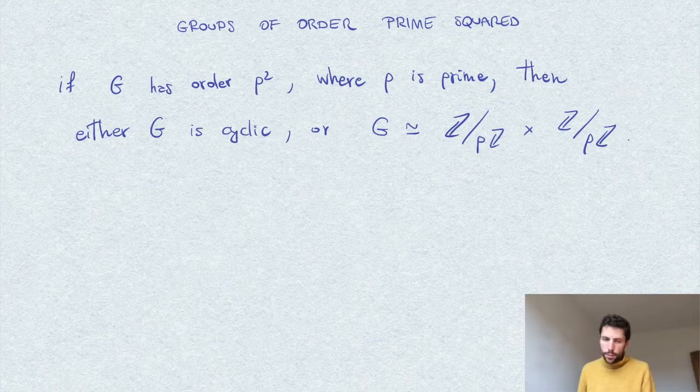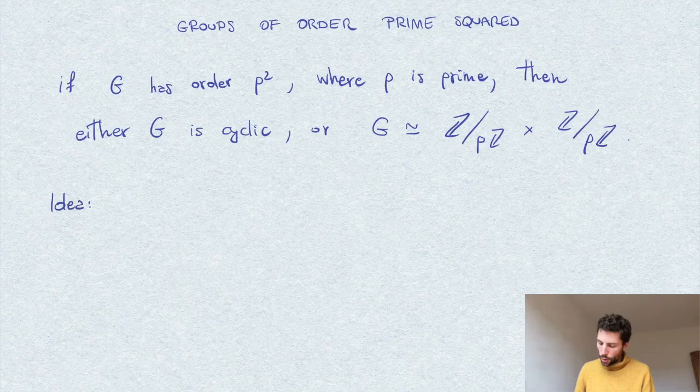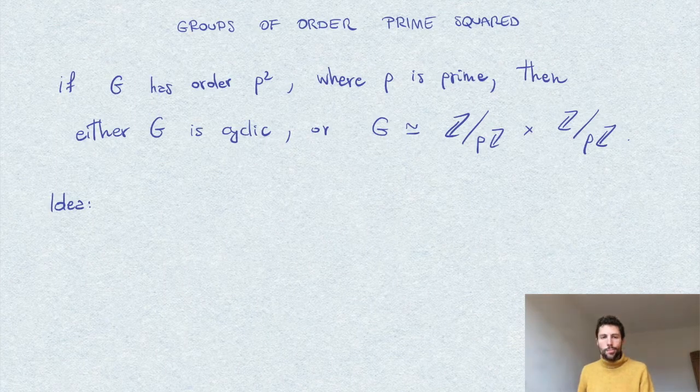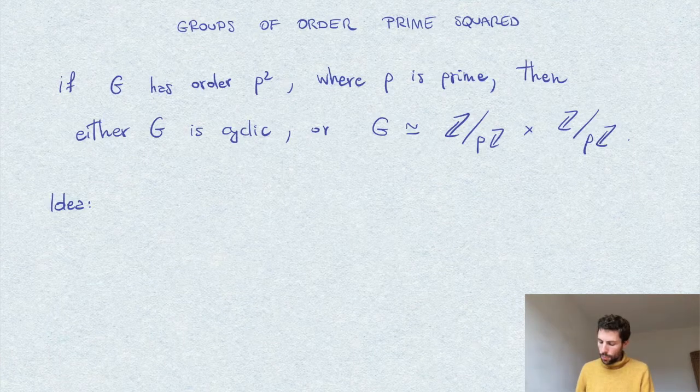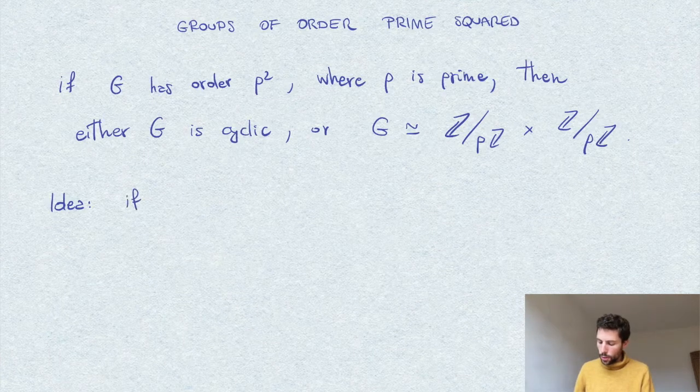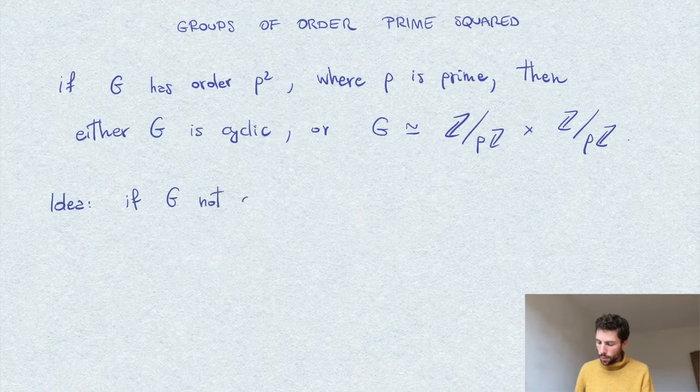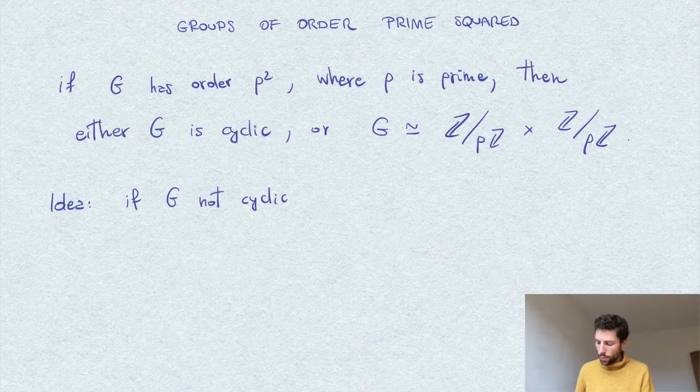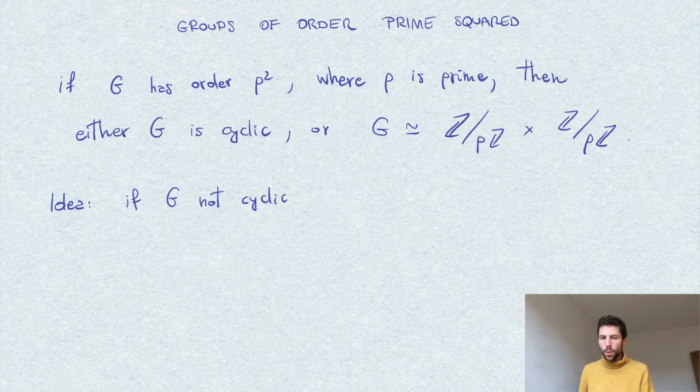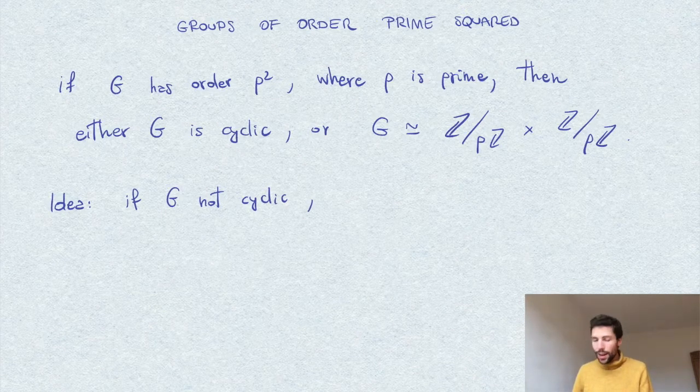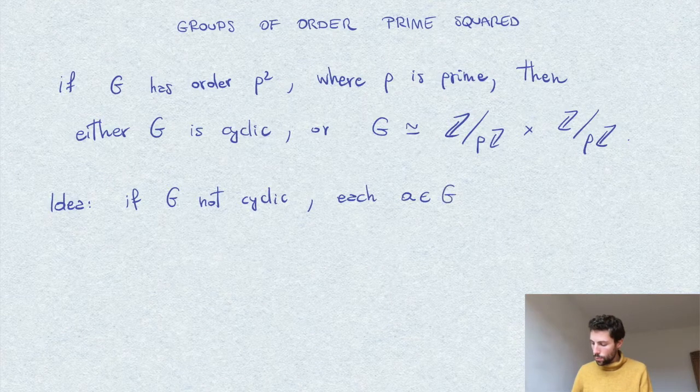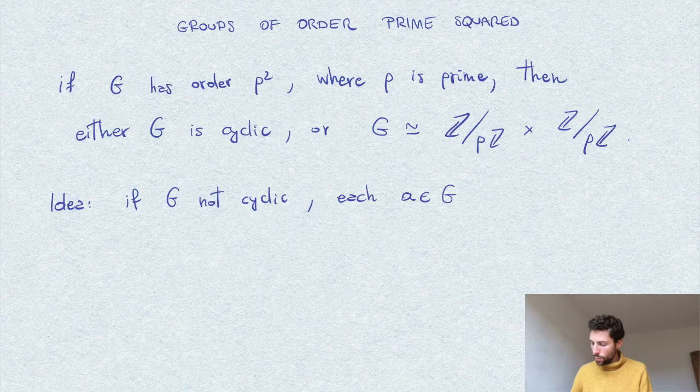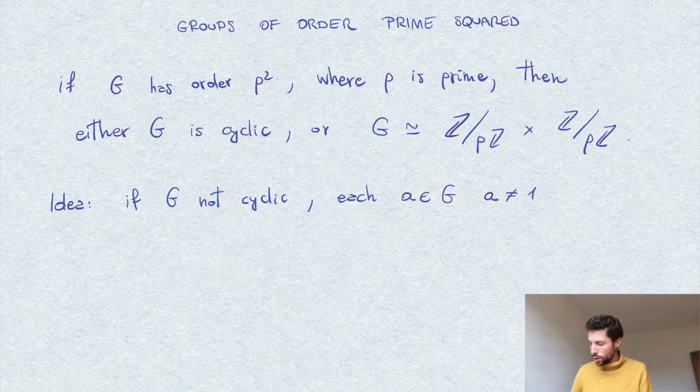So let's see why is this the case. The idea is the following: of course, in the cyclic case there is nothing to prove, so we suppose that G is not cyclic. Then, what we have is that each element has order p, at least each non-trivial element.